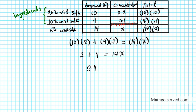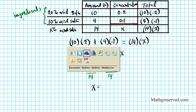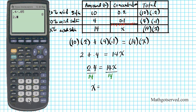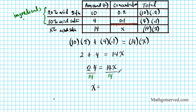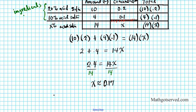So we have 2.4 equals 14x. To get x by itself, we divide both sides by 14. That gives us x equals 2.4 over 14. Putting that in the calculator: 2.4 divided by 14 gives us approximately 0.17. So the concentration in decimal form is approximately 0.17. To convert to percent, we move the decimal point two places, which gives us 17%.